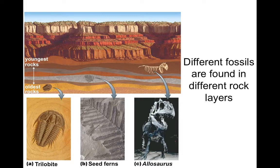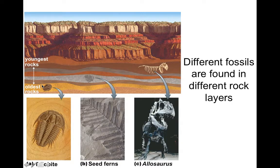Rock stratification illustrates this clearly: the trilobite is found in the oldest (bottom) rock layer, a seed fern in the middle layer, and an allosaurus in the youngest (top) layer. This demonstrates that trilobites lived on Earth at an older timeframe than allosauruses. If seed ferns are found alongside an unknown organism elsewhere, we can approximate that organism's age by whether it's in the same, older, or younger rock layer.